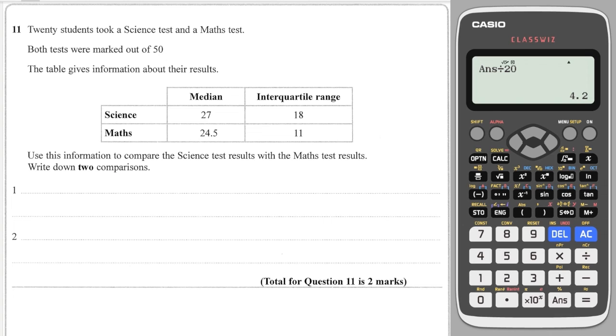Okay, the final tricky question is one where you have to compare the difference between the medians and the interquartile range. Now, lots of students get this wrong because they don't really understand what the interquartile range is. So first off, let's consider the median. So we can say, on average, the students scored higher in the science test as the median was greater.